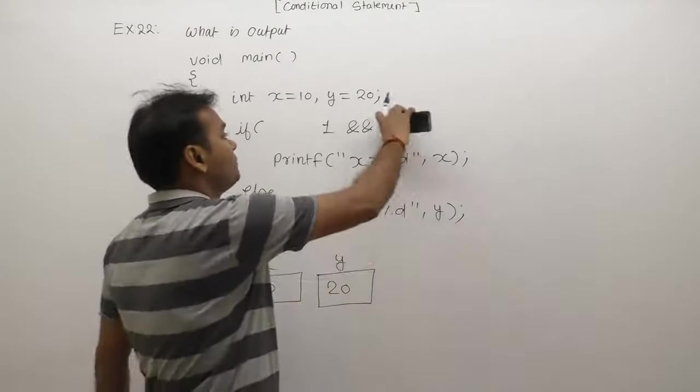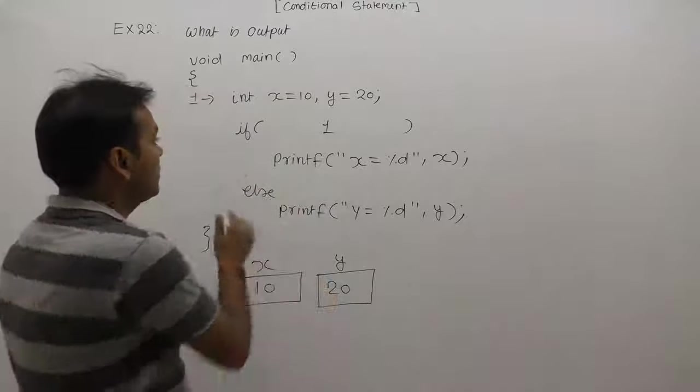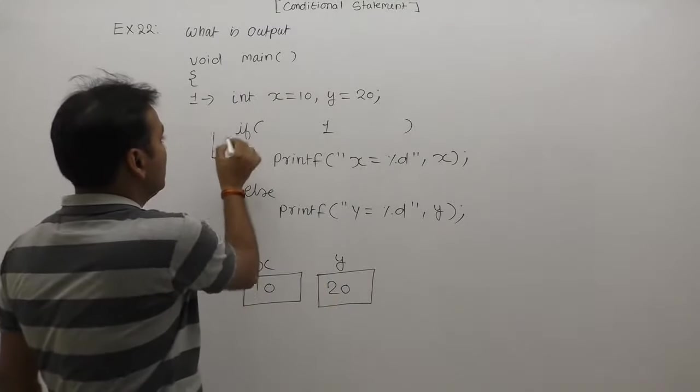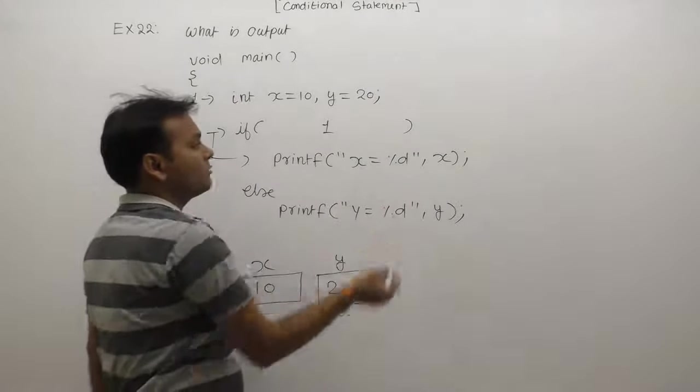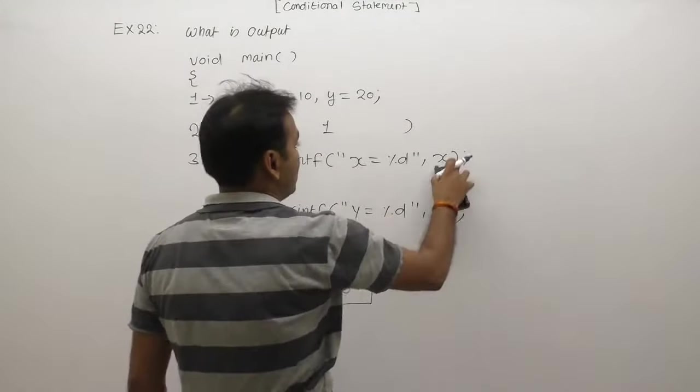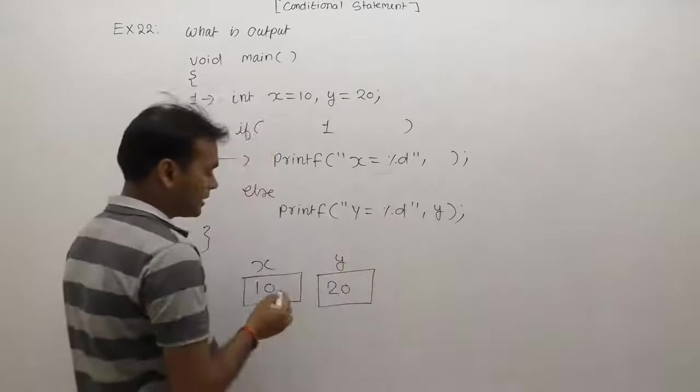Condition's overall result is true. According to true, chance will be provided to the second case. After testing if condition, in the third case chance will be provided to printf x equal to %d. At x's place we will replace with x's value.